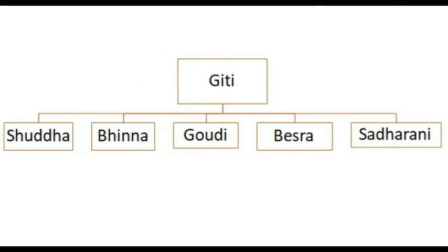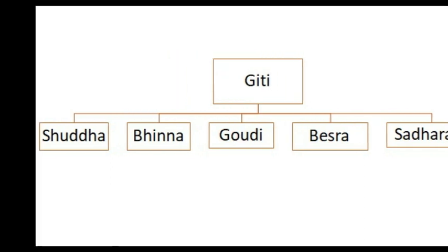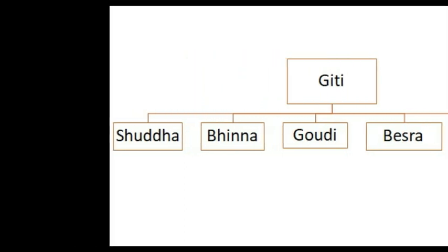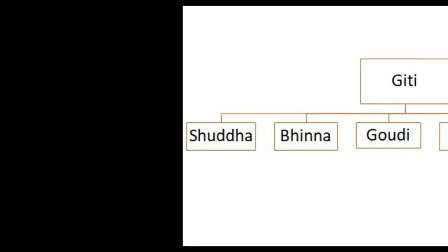The regional singing styles include Shuntha Githi, Pinnat Githi, Gaudi Githi, Shadrani Githi, Vesada Githi, etc. The Gandharva ragas are: Kramraga, Vasharaga, Raga, and Uparaga.